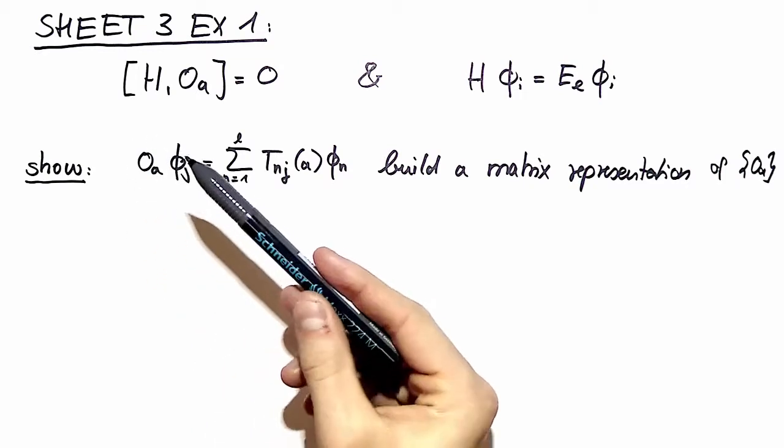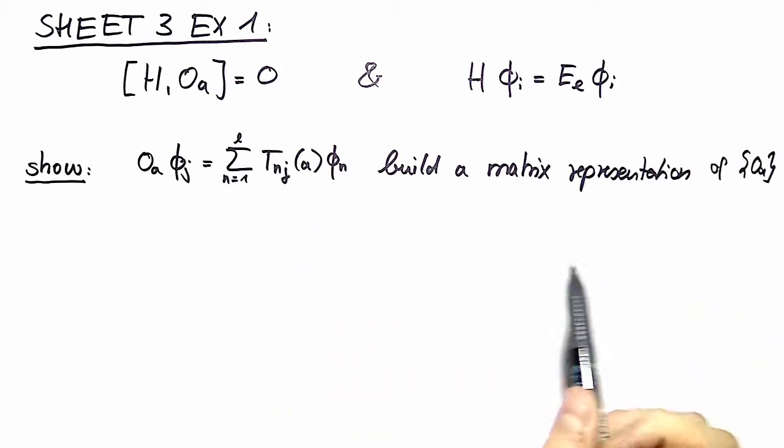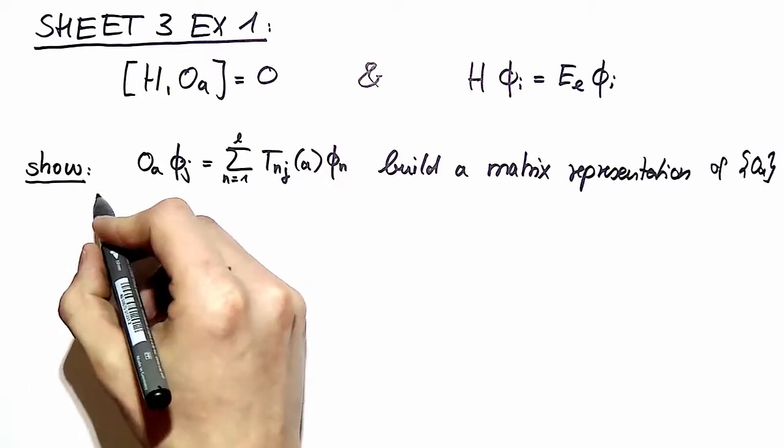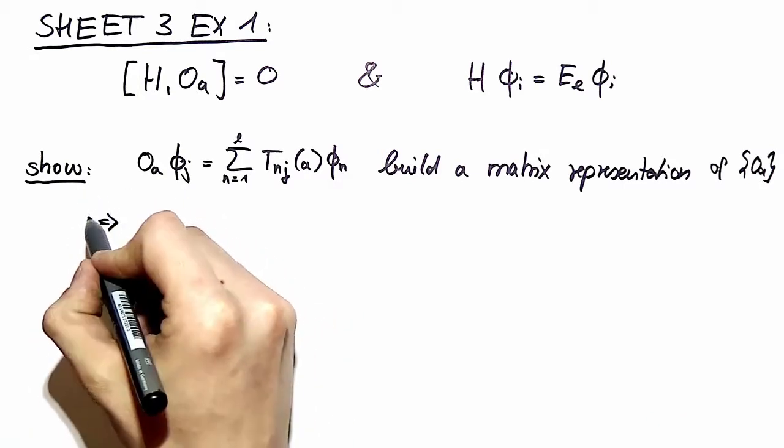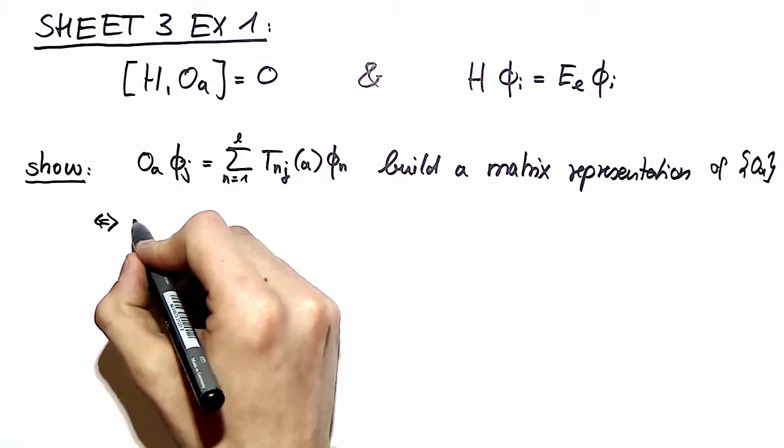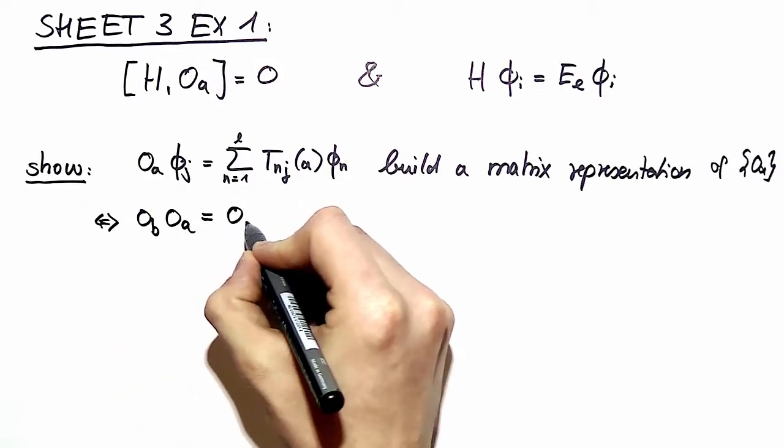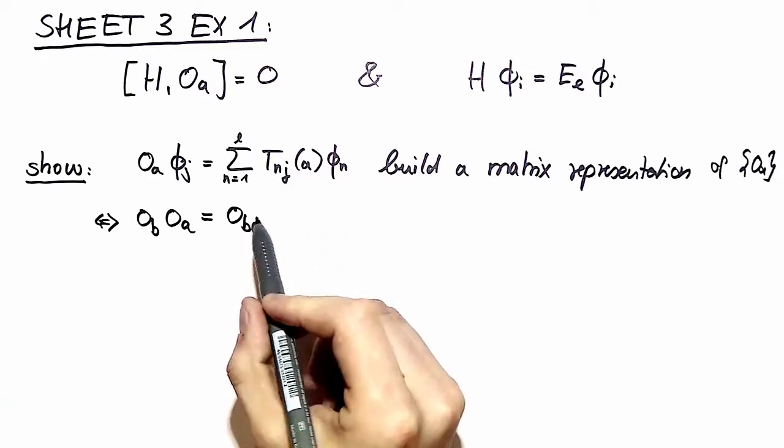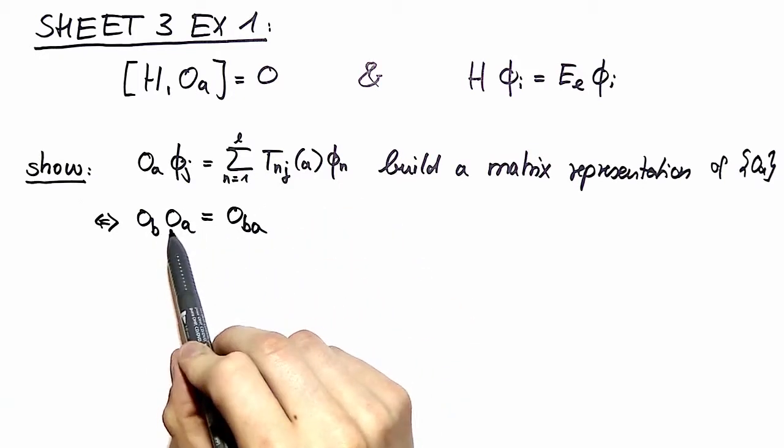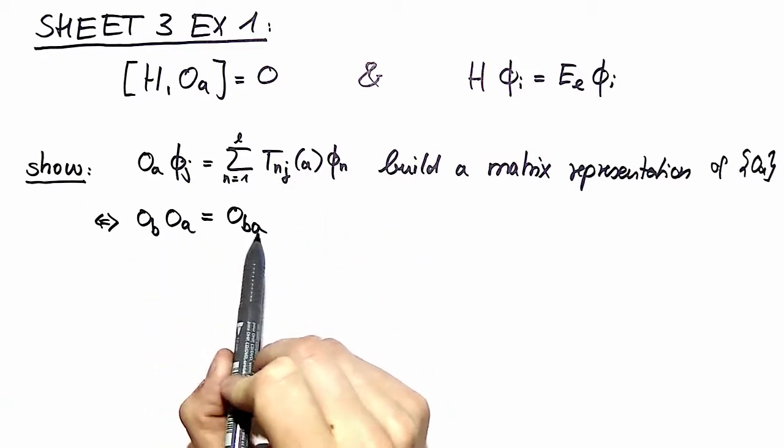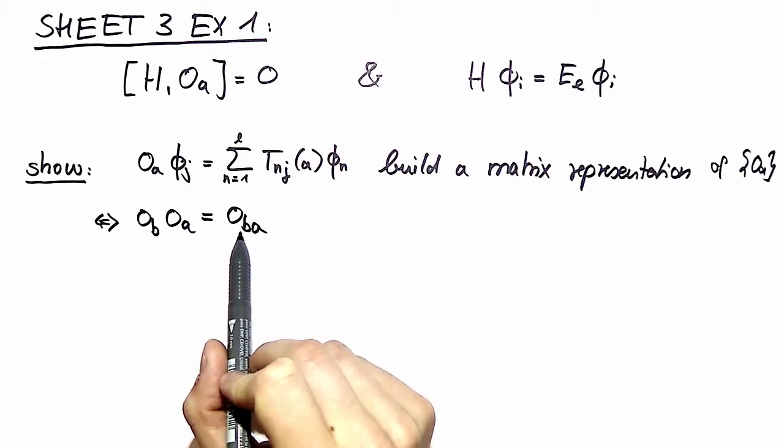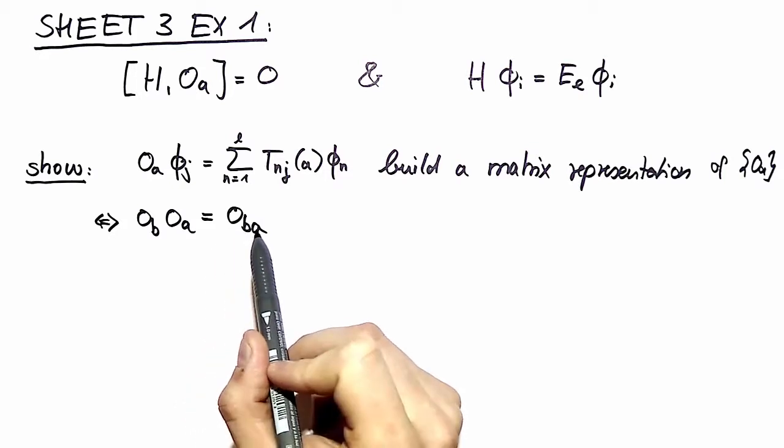So how do we proceed? Okay, we say that this is a group. Therefore, what we have to show is equivalent to saying OB and OA must be in the same group. So if we act with A first and then with B, the resulting symmetry element must be in our group of symmetry elements as well.